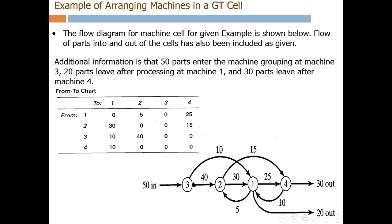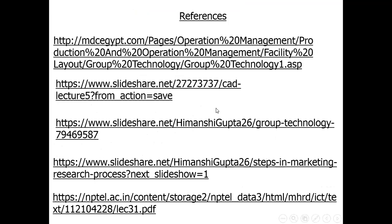These machines can be different types such as lathe machines, milling machines, or other combinations, and this method shows how to arrange them in a group technology cell for optimal part flow. These are the references used. Thank you.